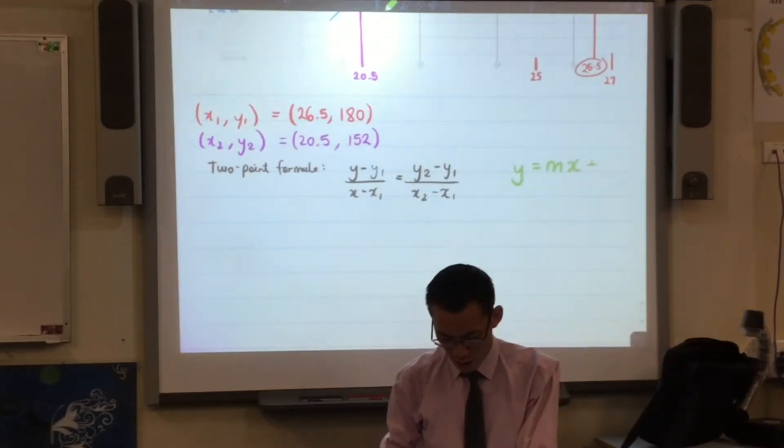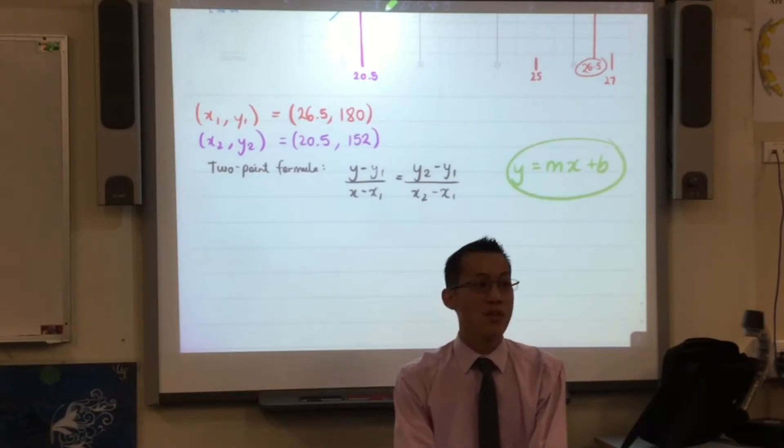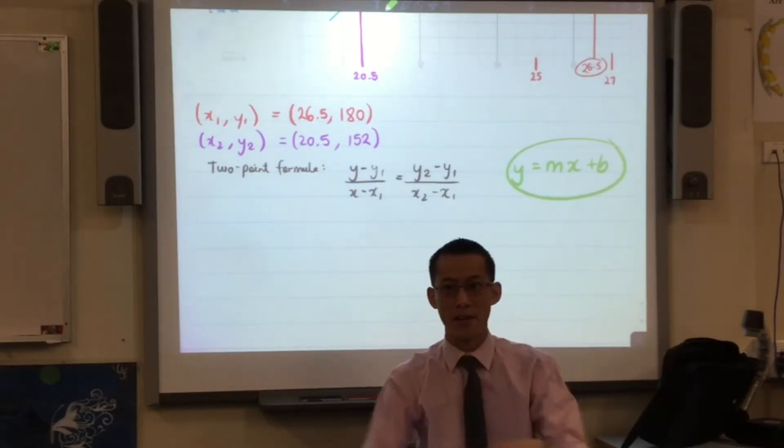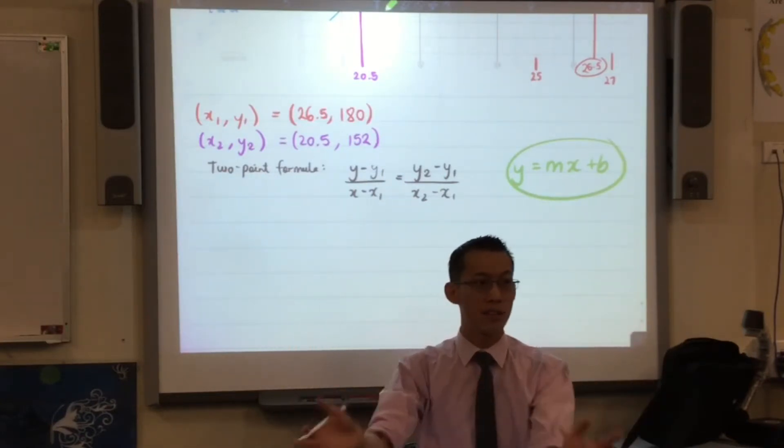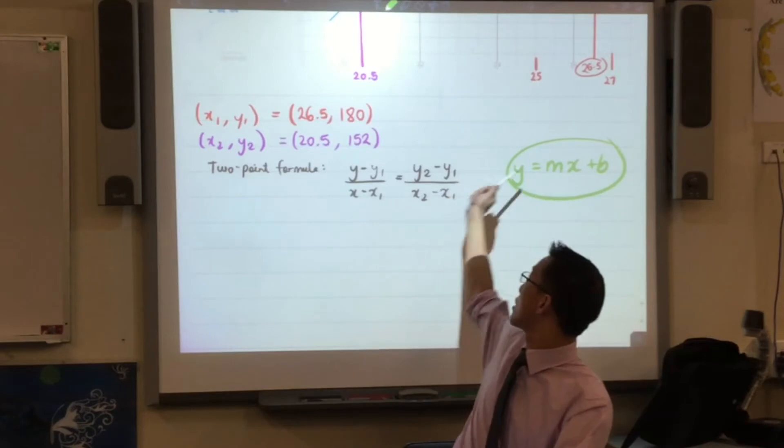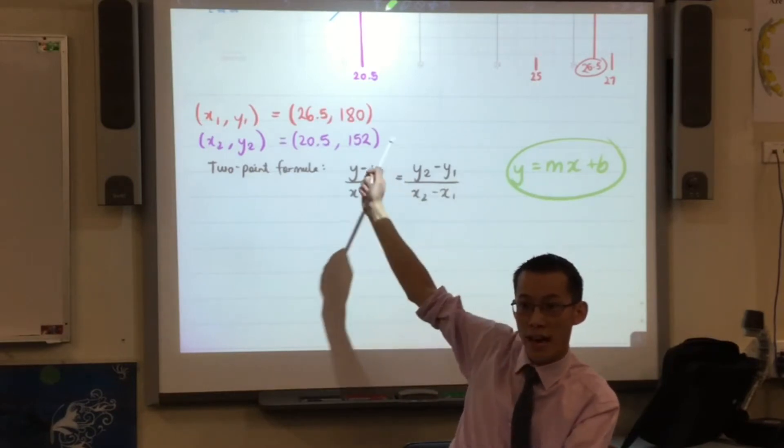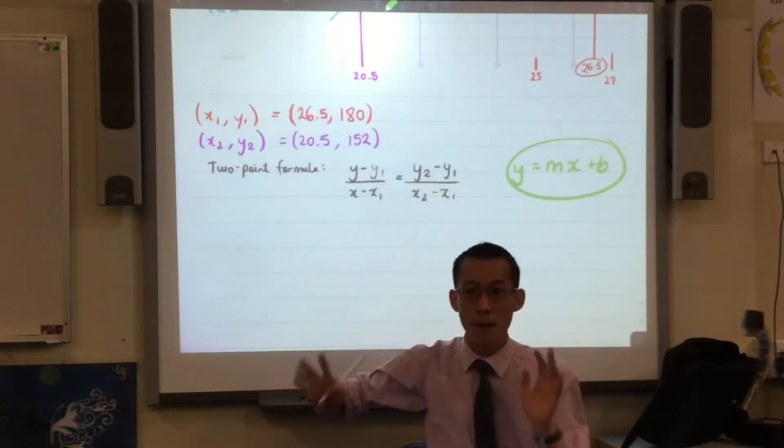y equals mx plus b. Can you please do two things? Number one, substitute your numbers in. You're welcome to use a calculator because they're gross numbers. And once you substitute, rearrange until you get to this form. Can you do that? I'll give you three or four minutes to have a go.